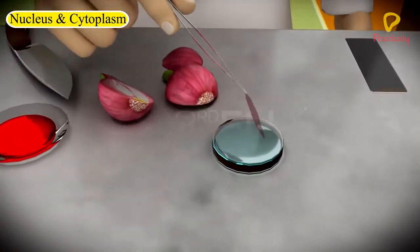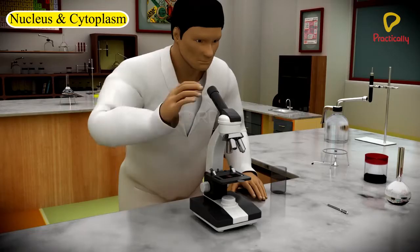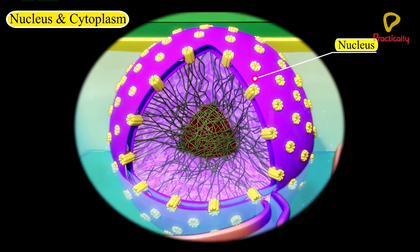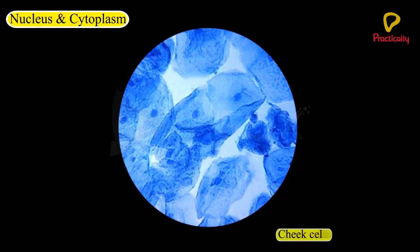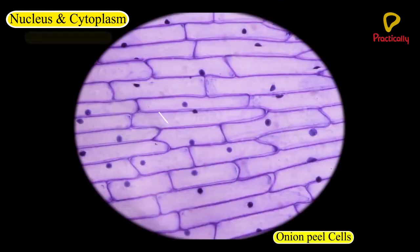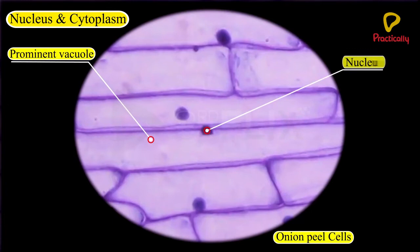When we observe the cells of onion peel and the cheek cells, we can identify the difference in the location of the nucleus. In cheek cells, the nucleus is present in the centre, whereas in onion peel cells, a prominent vacuole is present in the centre of each cell, with the cytoplasm peripheral and the nucleus within it.